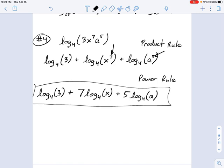So there's our answer. That is as simplified as you can get, because if you look at each one of these arguments, it's just a single number or letter. So there we go. Next example.